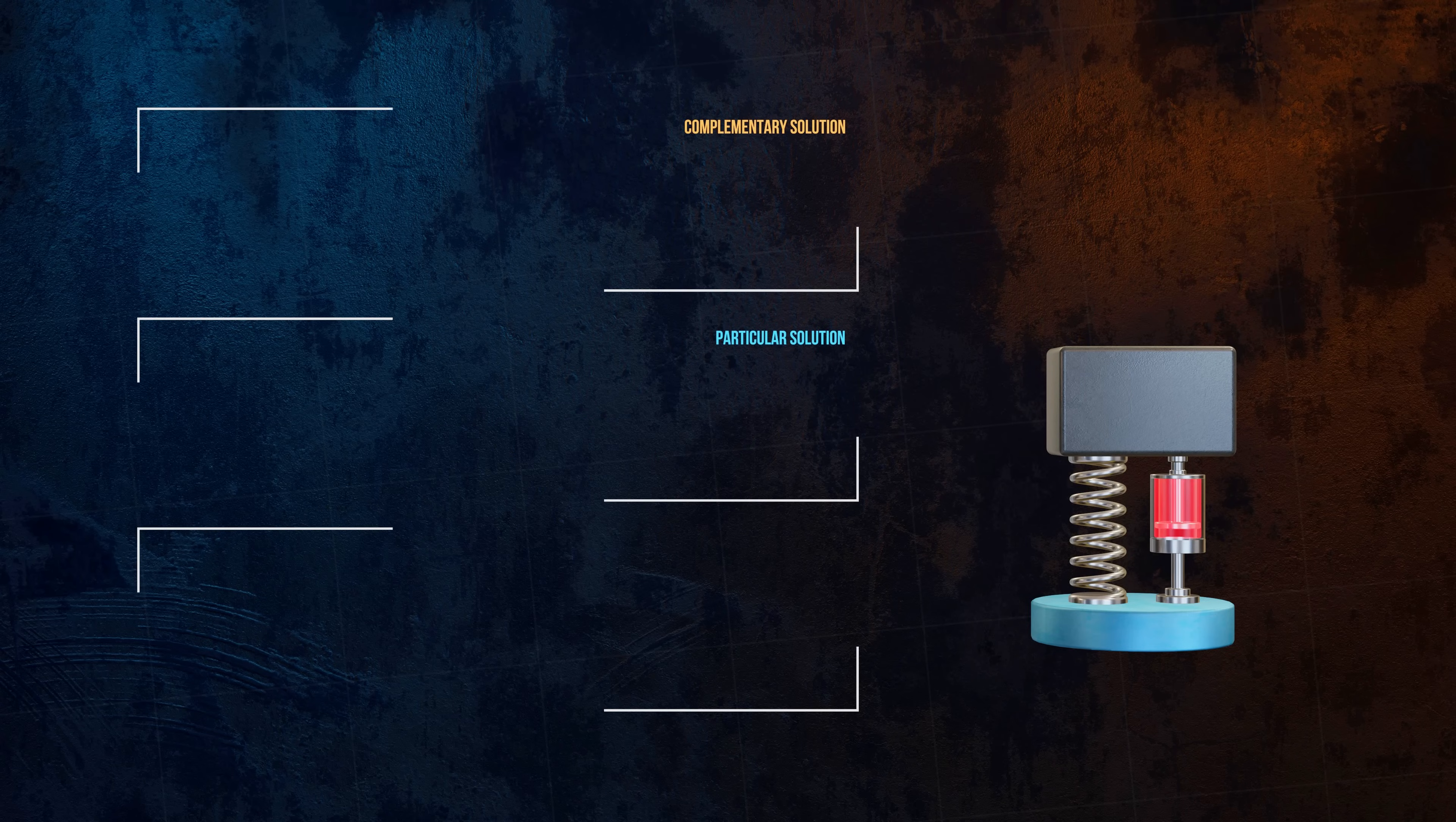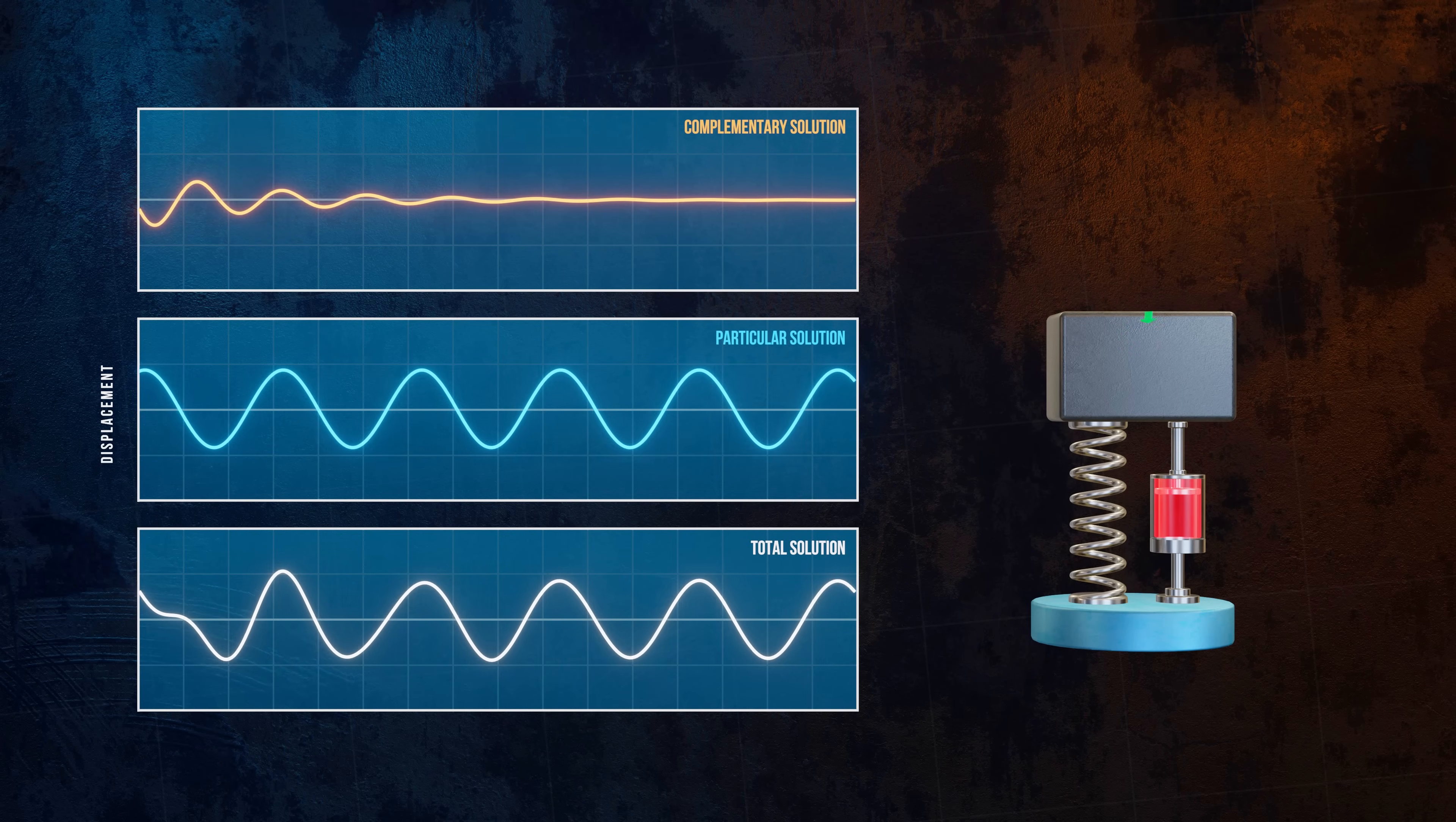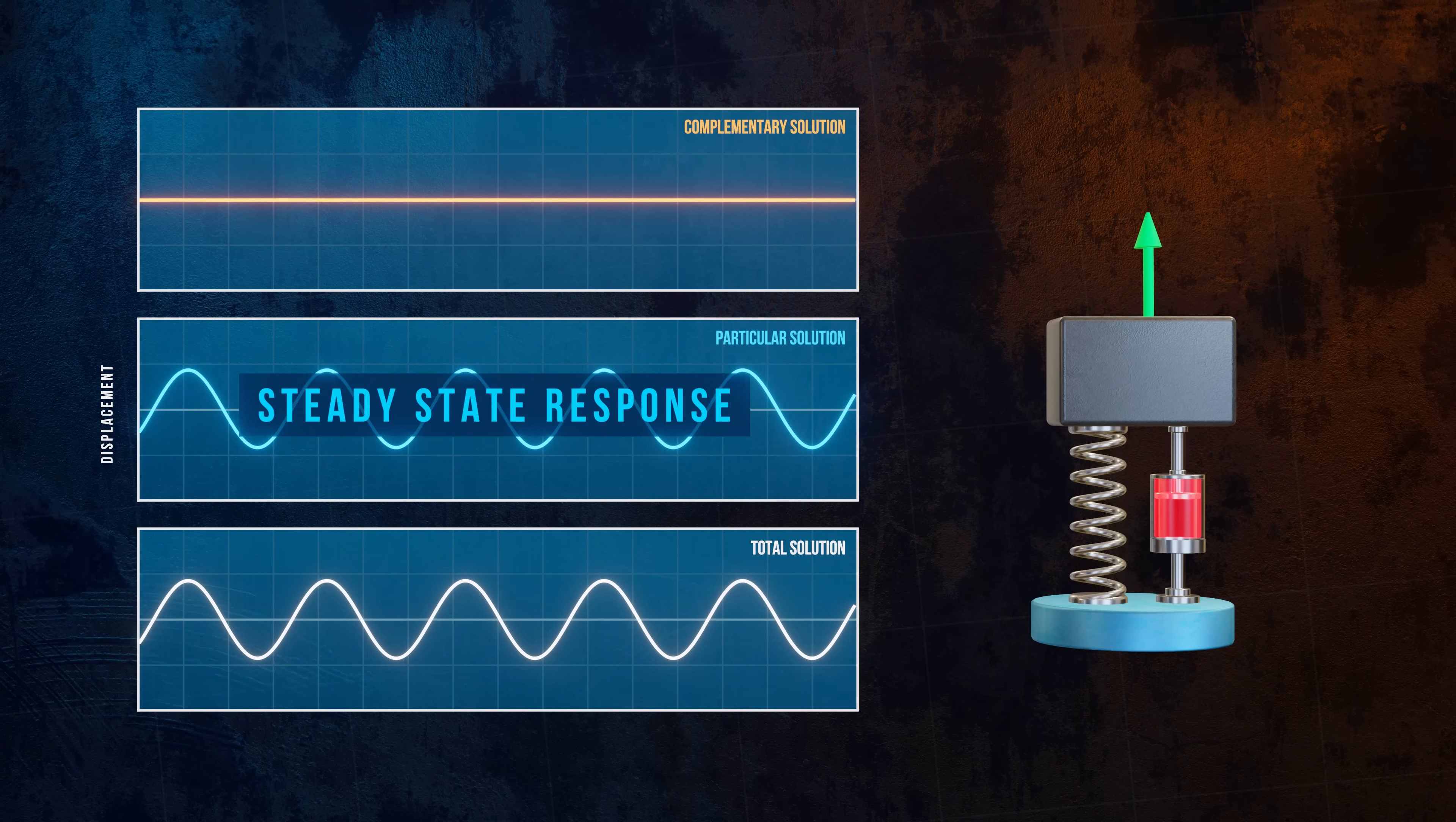Since there's damping in the system, the complementary solution that represents free vibration will eventually reduce to zero. At this point, the motion of the system is defined by the particular solution only. For this reason, the particular solution describes what's called the steady state response.